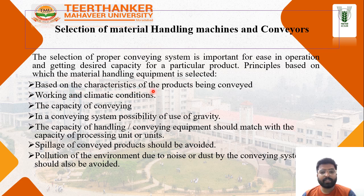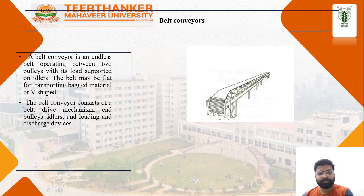Selection is based on the characteristics of the product being conveyed, working and climatic conditions, the capacity of the conveying system, and the possibility to use gravity. The capacity of the handling equipment should be matched with the capacity of the processing unit or per unit area. Spillage of the conveying product should be avoided, and pollution of the environment due to noise and dust from the conveying system should also be avoided.